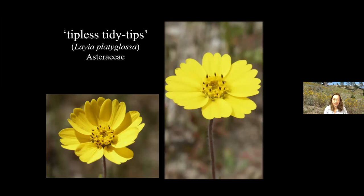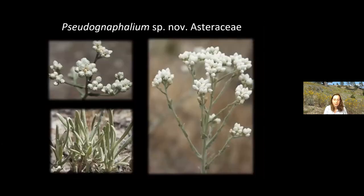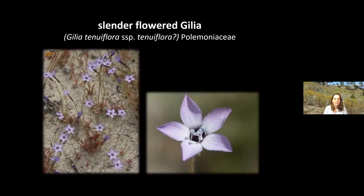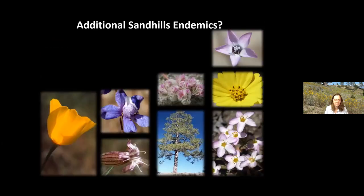We have tipless tidy tips in the Sandhills. Tidy tips is a grassland plant that typically has white tips on the outer parts of the inflorescence — that's why they're called tidy tips. But in the Sandhills, the inflorescence is entirely yellow and doesn't have the tips. We have a Pseudognaphalium in the Sandhills that's yet to be described. There just aren't as many people doing the taxonomic work required to describe these species. There's also a slender-flowered Gilia — this one doesn't key out to anything well described; the closest thing is Gilia tenuiflora, but it doesn't actually match that. So there are actually other potential Sandhill endemics.